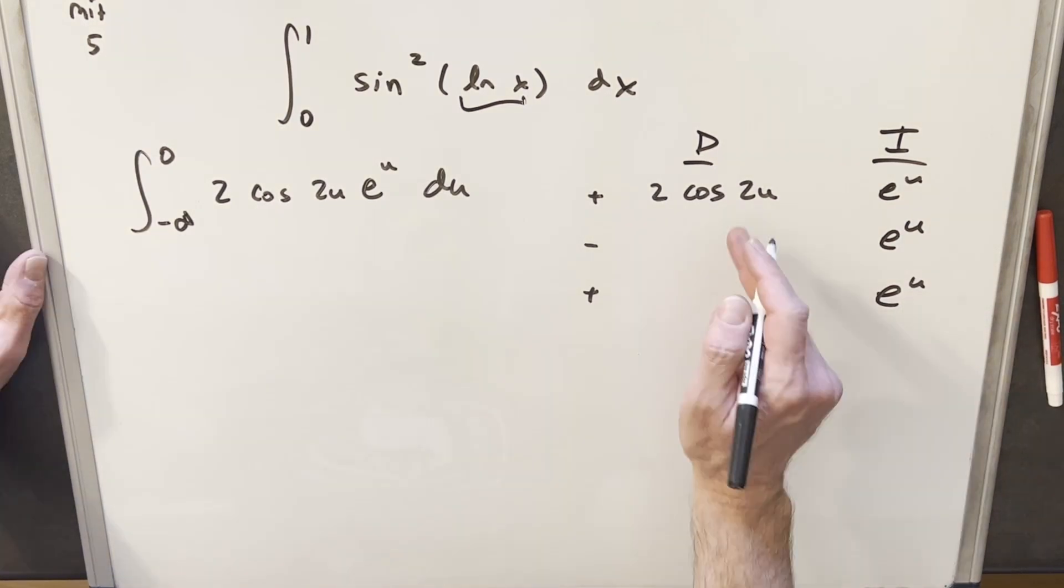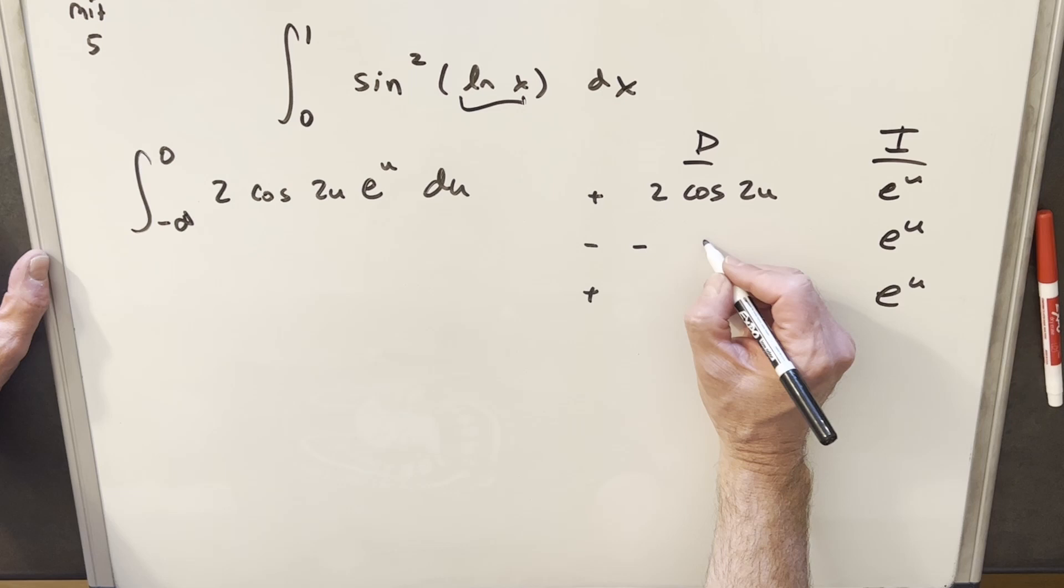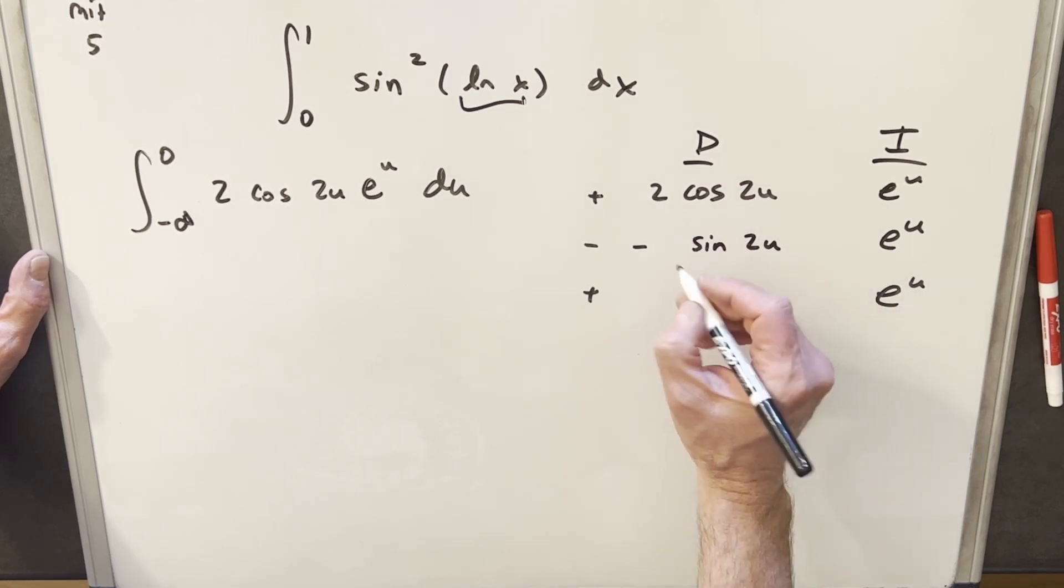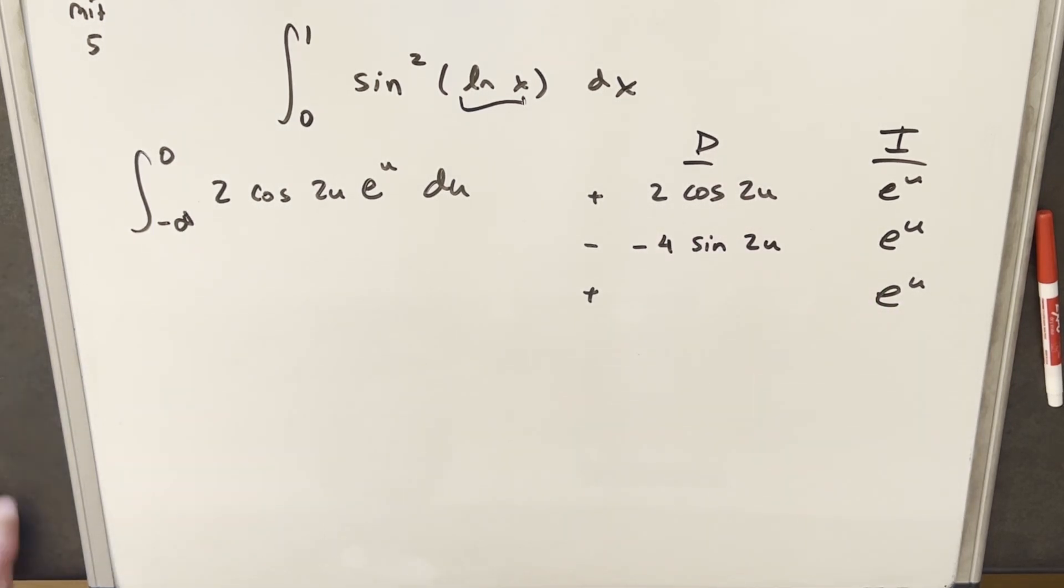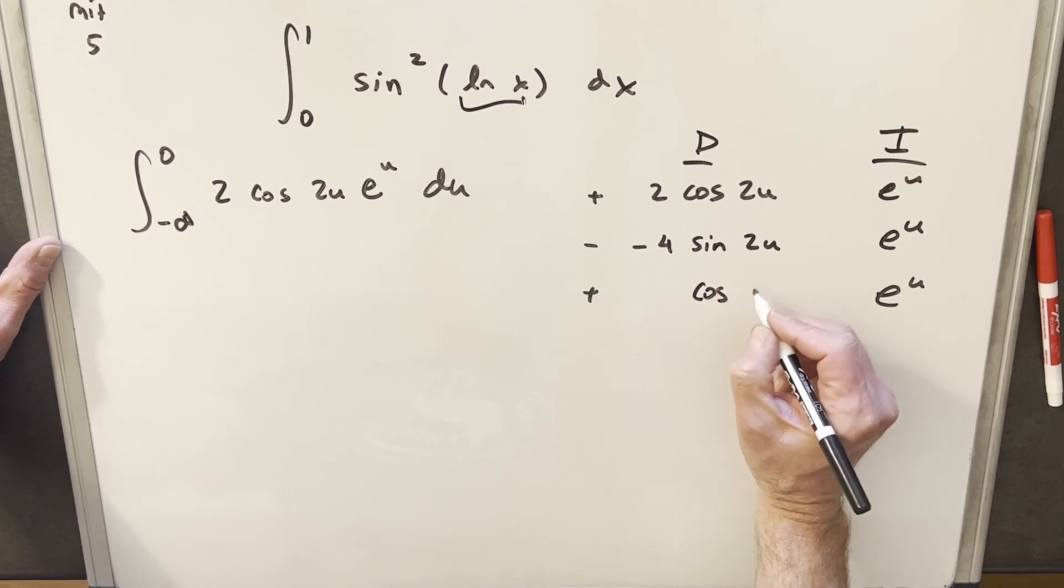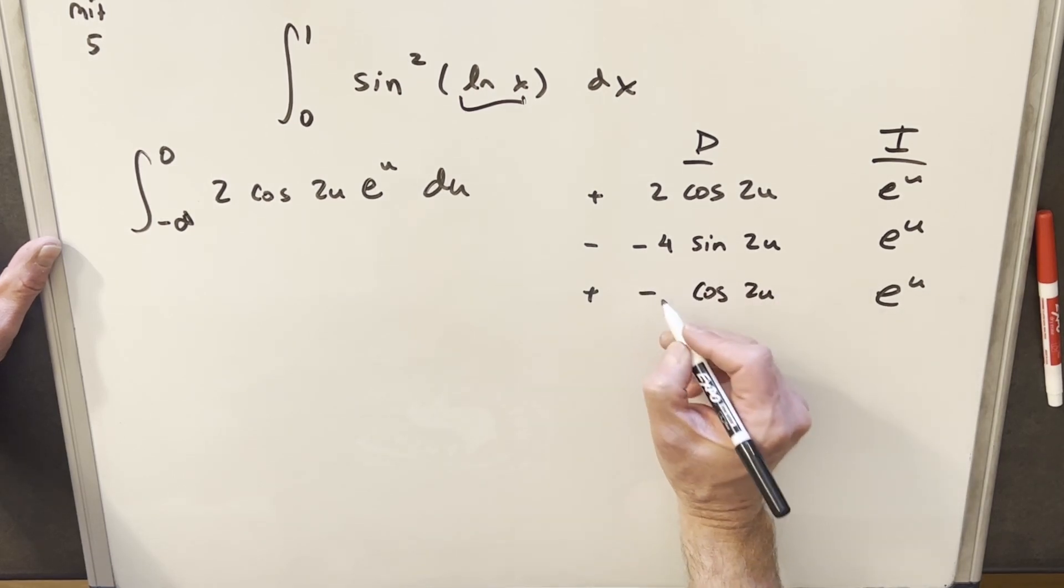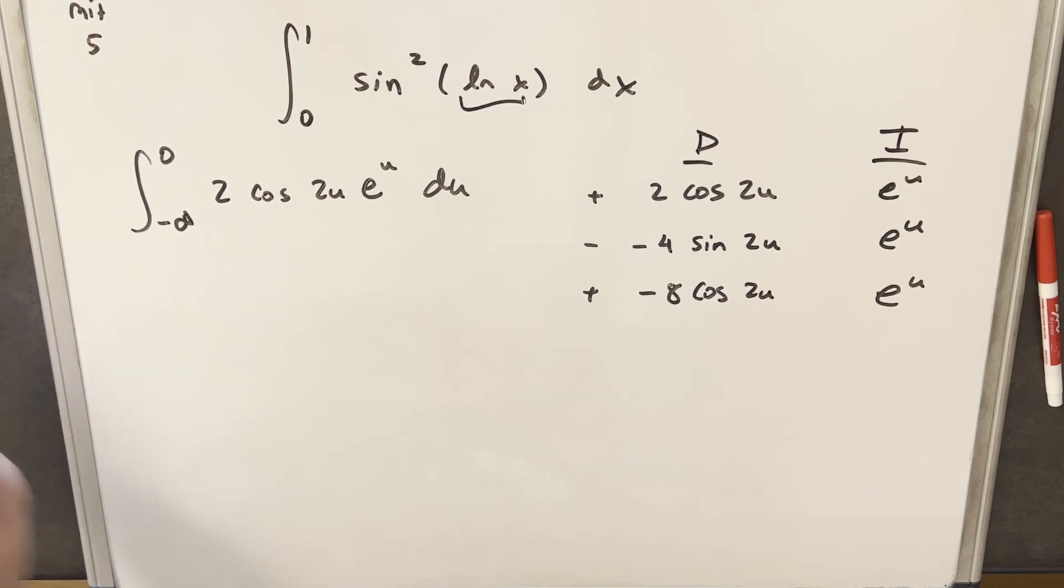Then here, differentiating this, we're going to have, this is going to be minus sine 2u pulling a 2 out. We're going to have now a minus 4 here. Then doing this one more time, we're going to have cosine 2u pulling a 2 out. Now we're going to have minus 8 here.